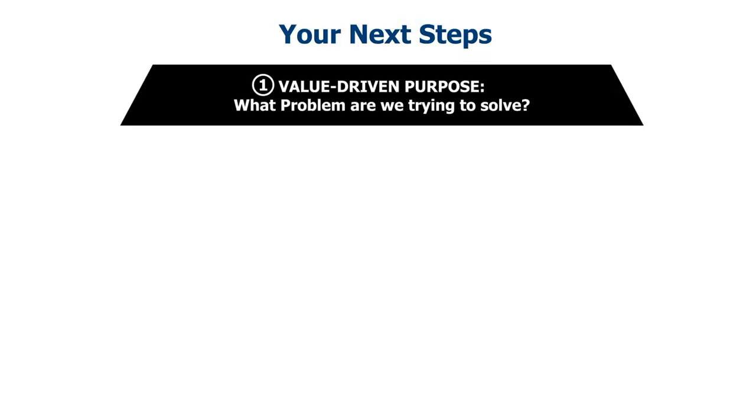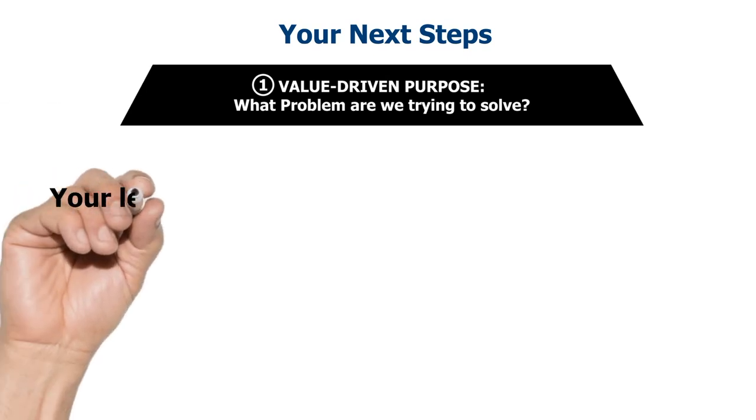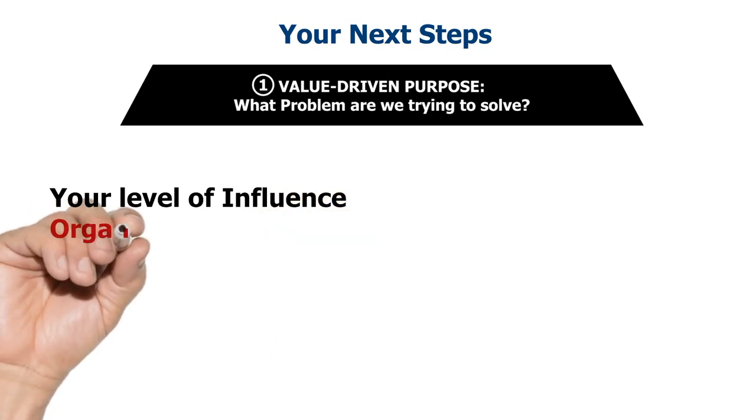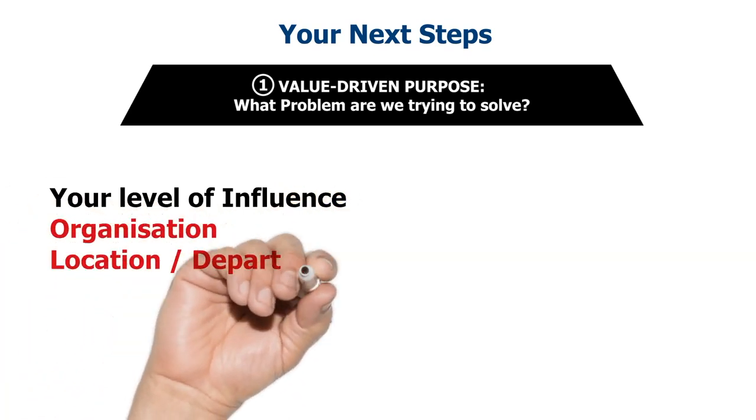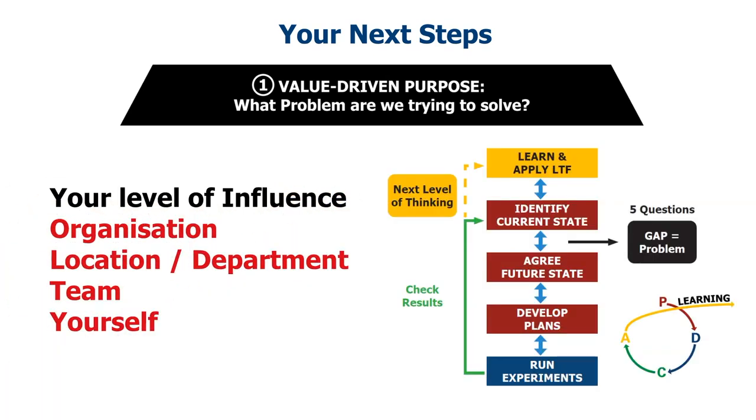Now you've learned more about the LTF and its importance in applying lean thinking and practice, what will be your next steps? We recommend you start by defining the problems you need to solve around your value-driven purpose for your actual level of influence. Follow the PDCA process to identify the gaps in your current approach to lean thinking and practice around the problems that you need to solve.